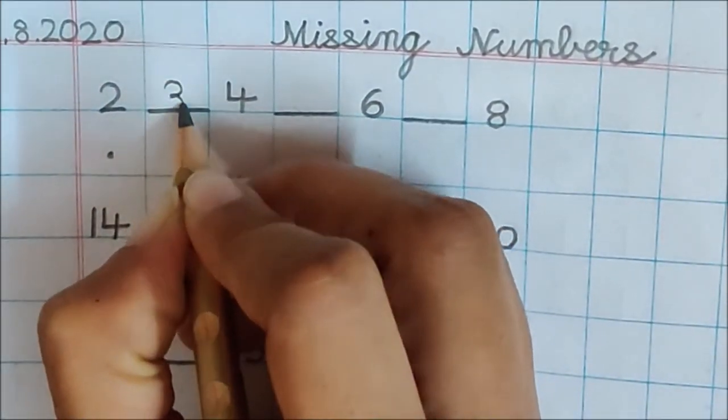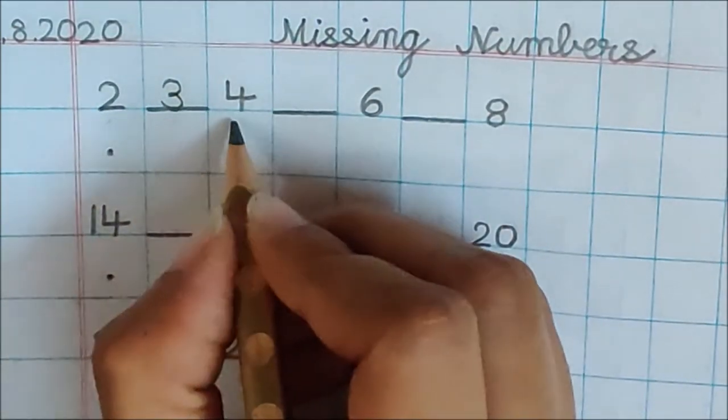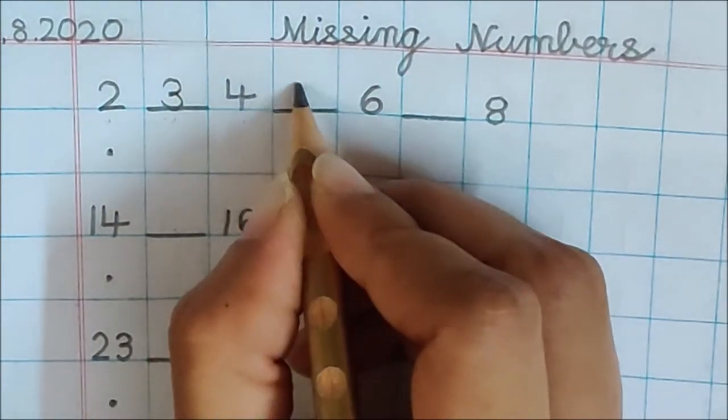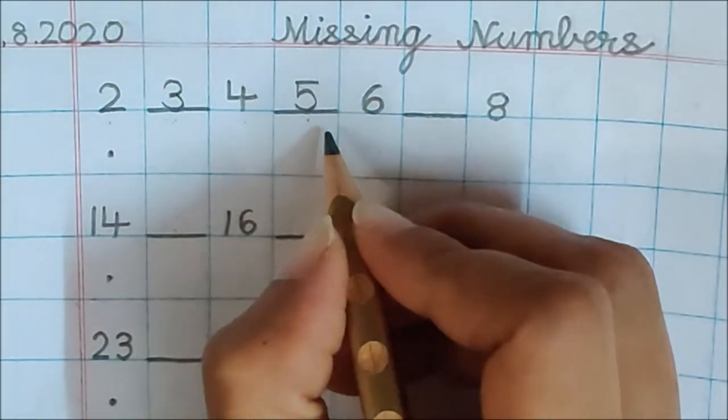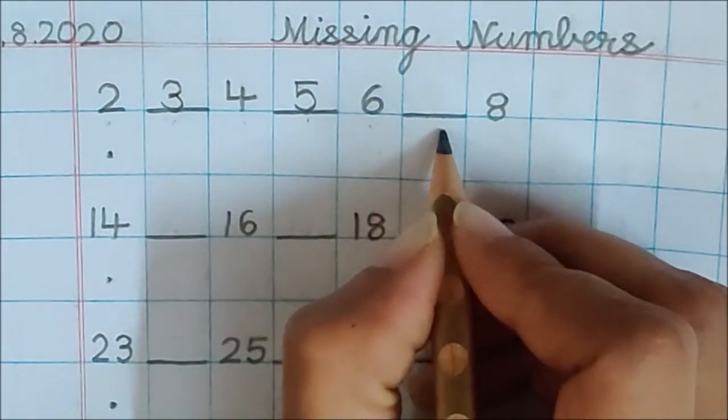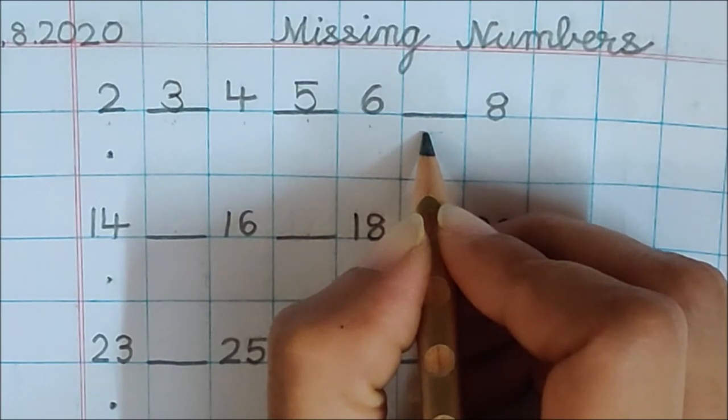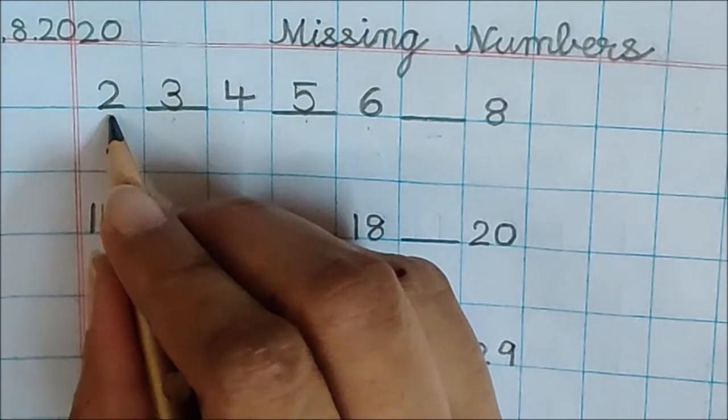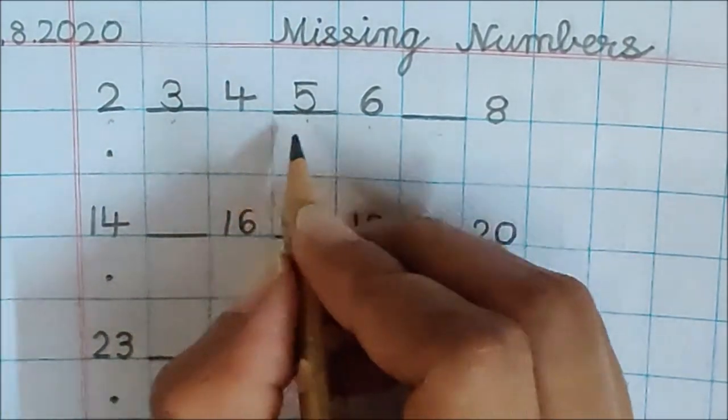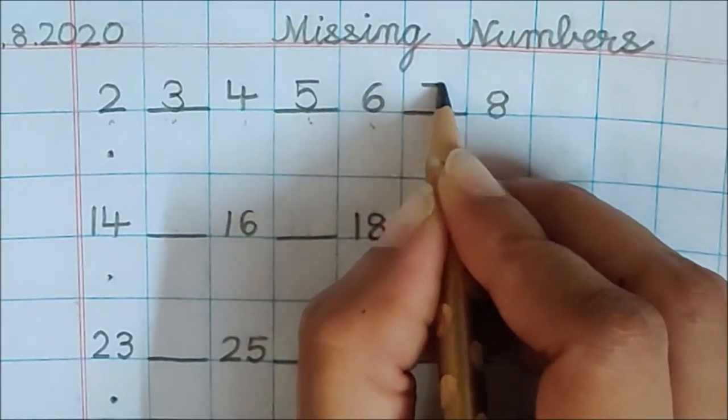So write here number 3. Touch the line. 2, 3, 4, 5. So write number 5. 6. What comes after 6? Hmm. I don't know. What should I do? Let me start counting from 2 again. 2, 3, 4, 5, 6, 7. So write here number 7.